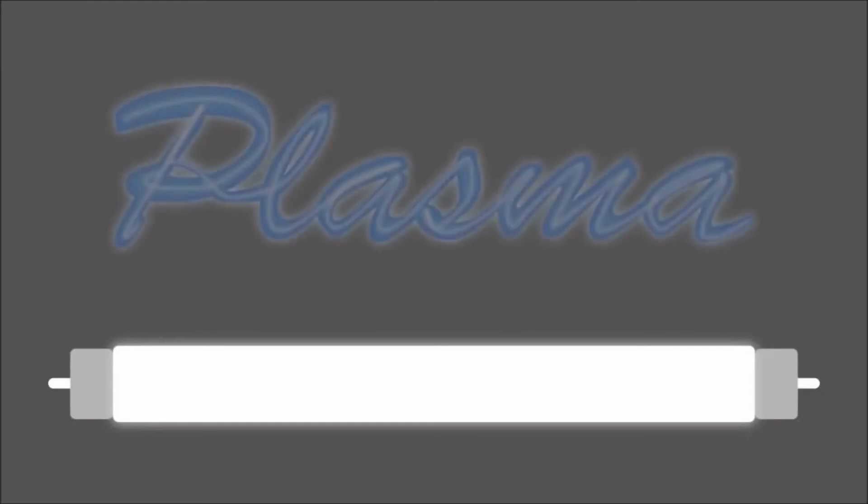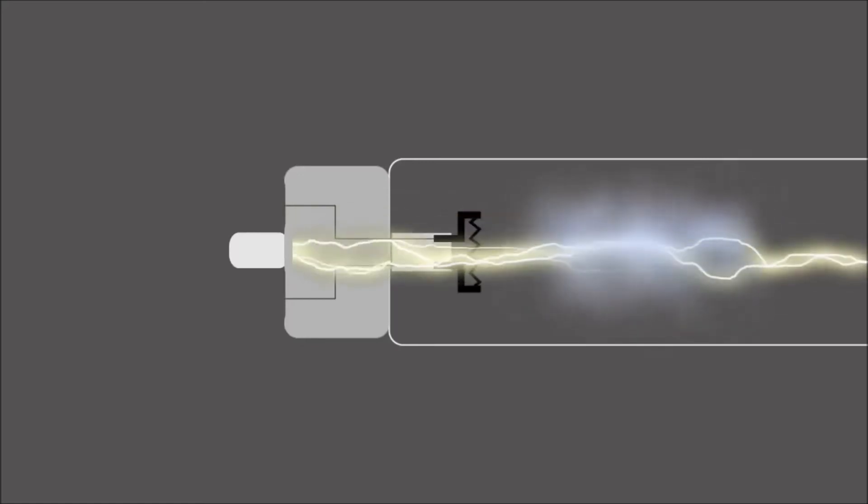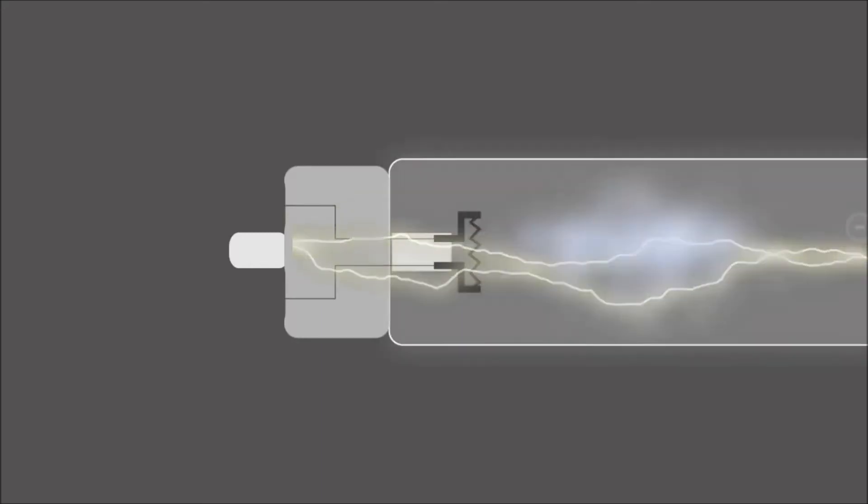Plasma can be found in fluorescent light bulbs and neon signs. When an electrical current is passed through the mercury vapor in fluorescent light bulbs, it heats up the gases sufficiently to strip the electrons and to create plasma.